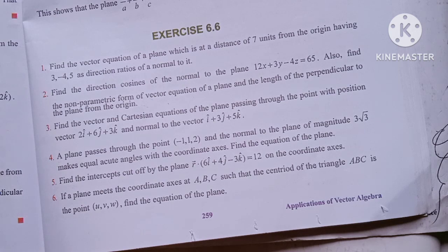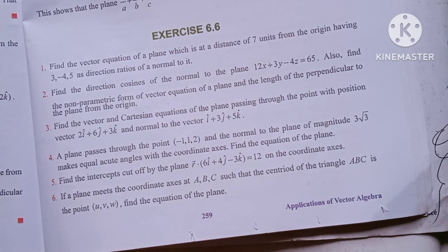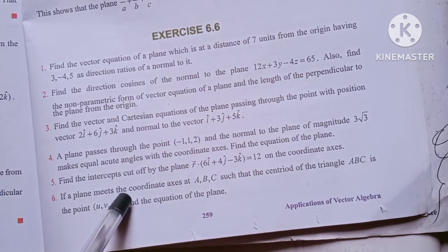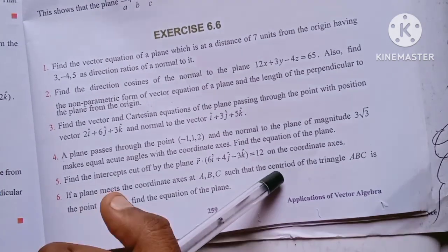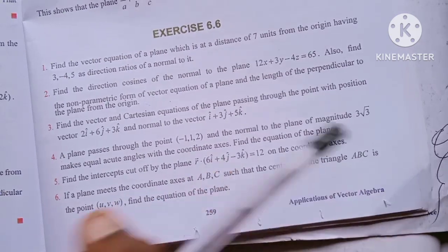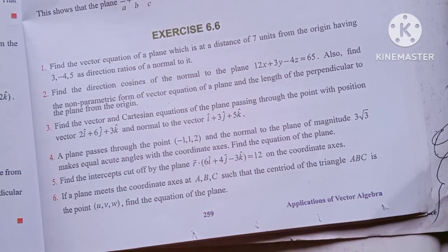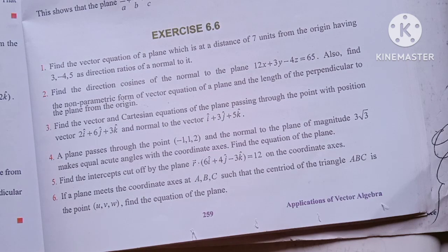The question is: if a plane meets the coordinate axes at A, B, C such that the centroid of the triangle ABC is the point U, V, W, find the equation of the plane. So A, B, C are the points on the coordinate axes, and the centroid of the triangle is the point U, V, W.